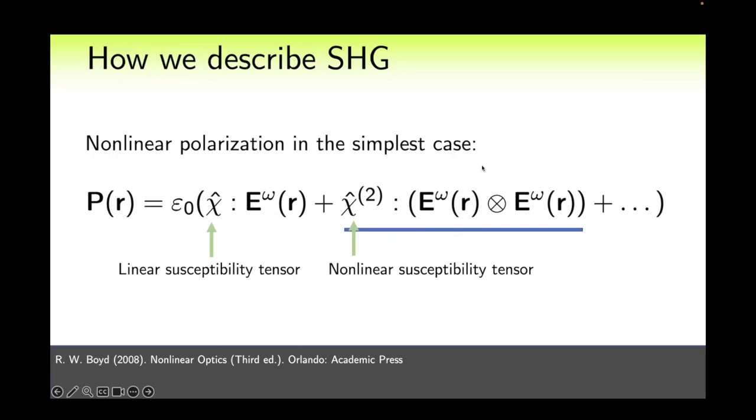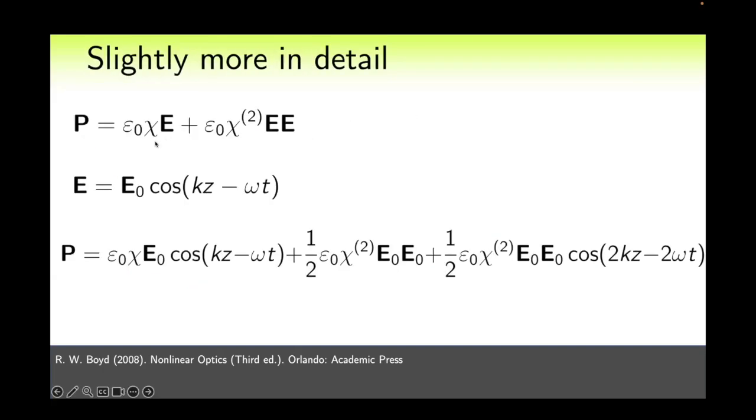What does this second term represent? Let us consider more in detail. In this slide we omit tensor product signs just for simplicity but it is just the same expression. Let us recall that light is electromagnetic wave so electric field can be presented as follows. It depends on kz minus omega t as a cosine. And let us substitute field of this form into expression for polarization.